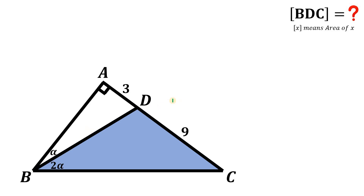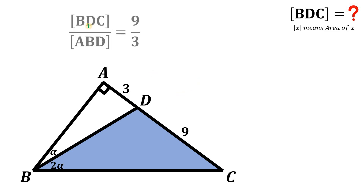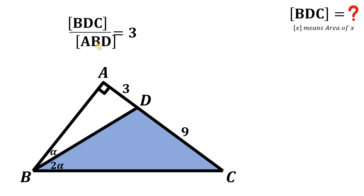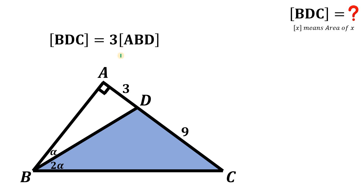All right. Given this figure, the goal is to find the area of triangle BDC. One thing to notice is we have here two triangles with the same height: triangle BAD and triangle BDC. So we can say that the ratio of their areas is the same as the ratio of their bases. The area of triangle BDC over the area of triangle ABD is equivalent to 9 over 3, which equals 3.